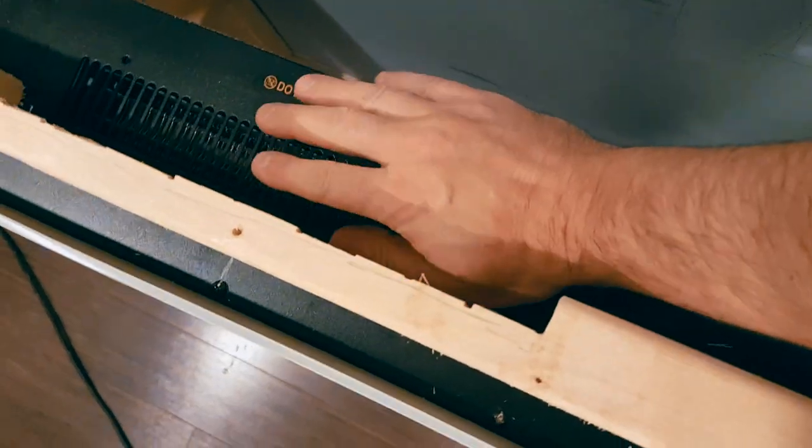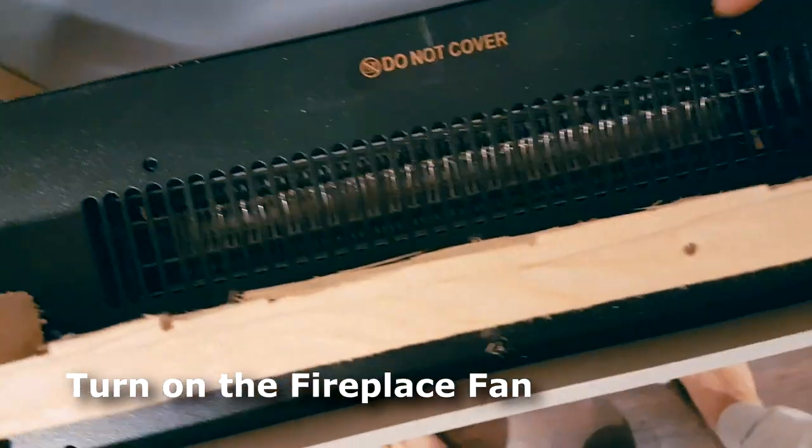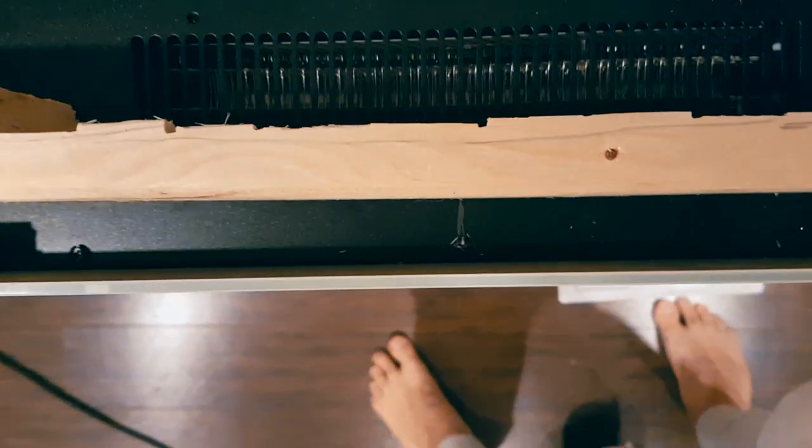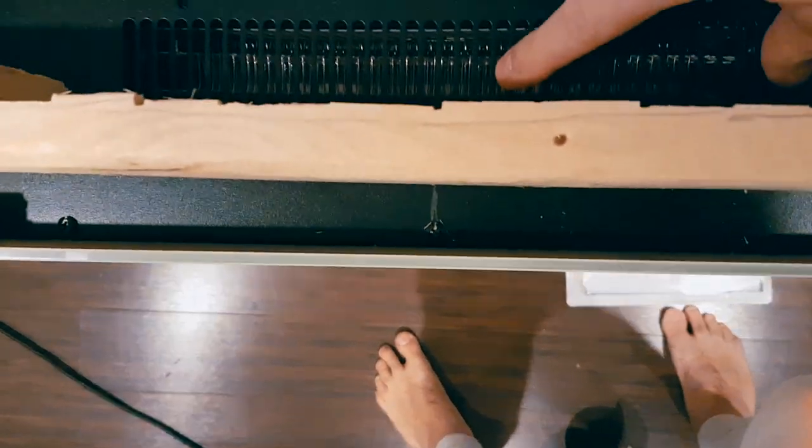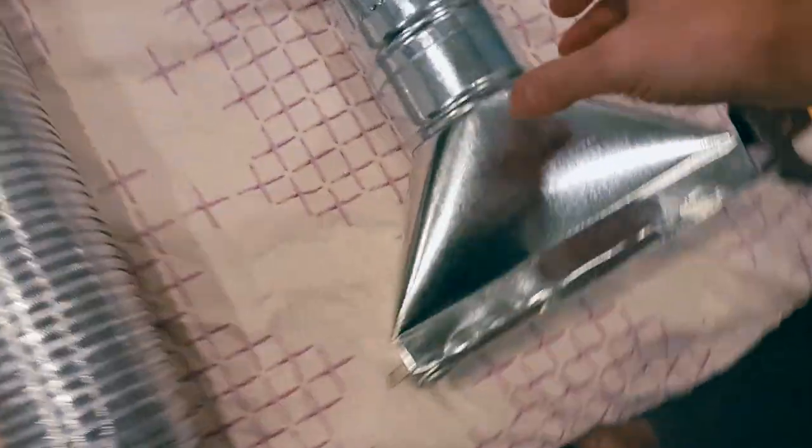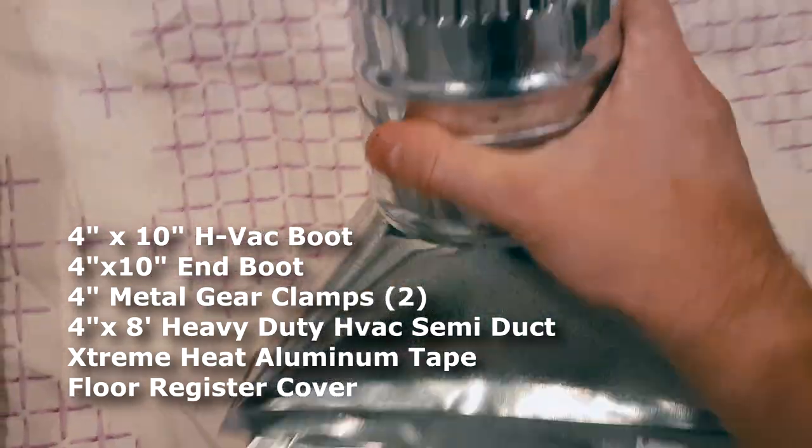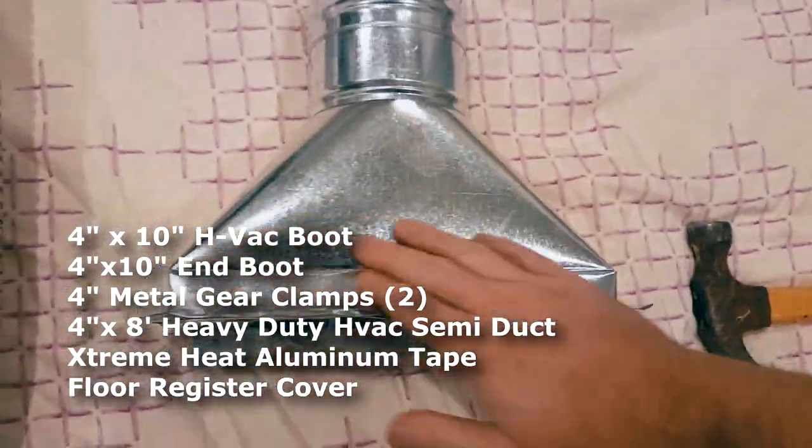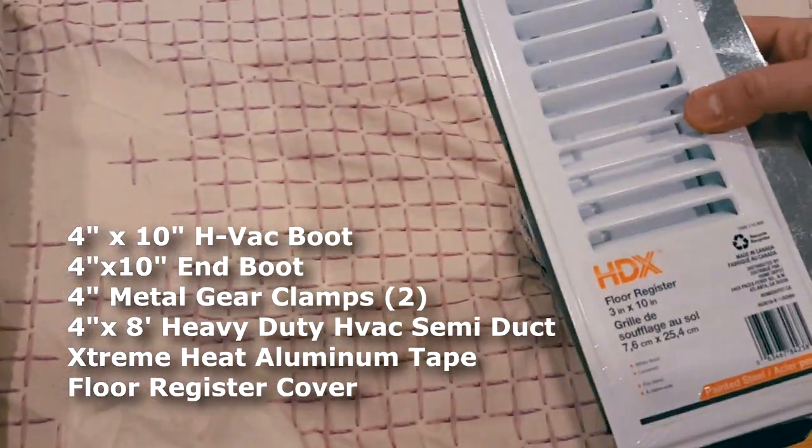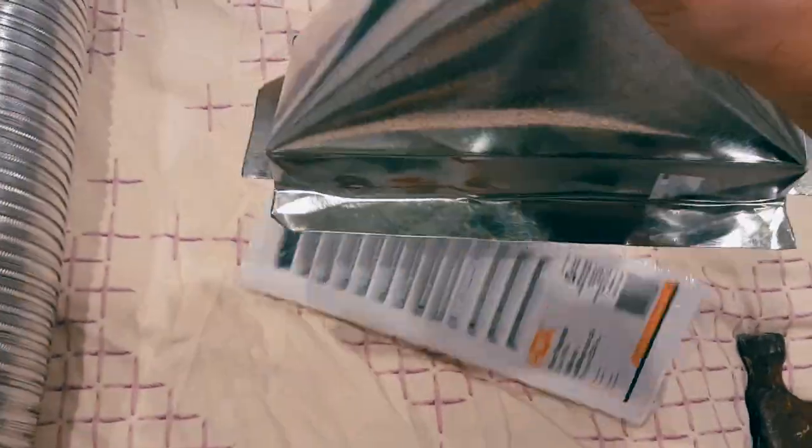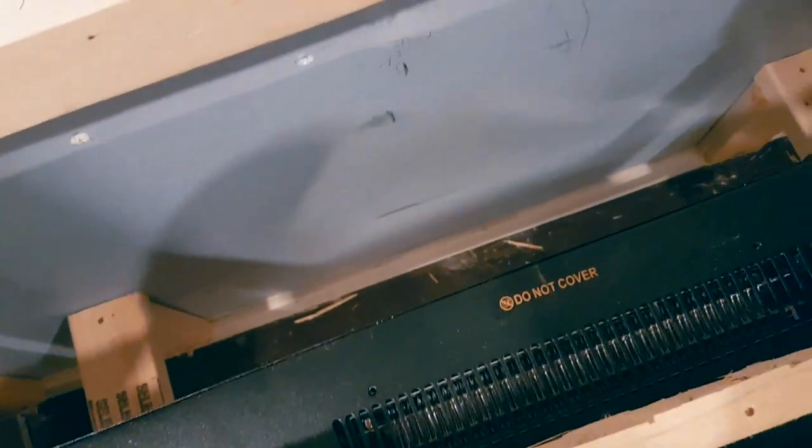First and foremost turn the fan on and you want to undo any screws that may be on the sides covering it. Next you're going to grab yourself probably a 4 inch duct connector. This is what we're going to do to attach over top and to capture the heat.